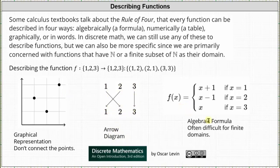As an algebraic formula we have a piecewise defined function where f(x) = x + 1 if x = 1, f(x) = x − 1 if x = 2, and f(x) = x if x = 3. Notice: if the input x is one, the output is 1 + 1 = 2; if the input x is two, the output is 2 − 1 = 1; and when the input x is three, the output is three.